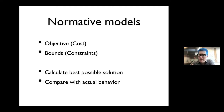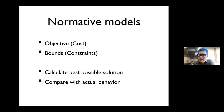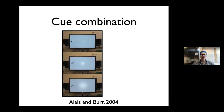So let's see how we get there. Just as a reminder — you've seen this slide yesterday — when we do Bayesian or normative models, how we specify objectives and bounds, and then we calculate the best solution and compare with actual behavior.